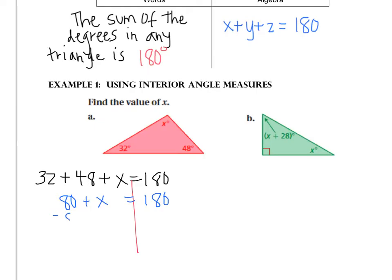That's going to be 80 plus x equals 180. Then you look for an inverse, which is minus 80, and so you get x equals 100 degrees. So very nice, done. Let's check out letter B.